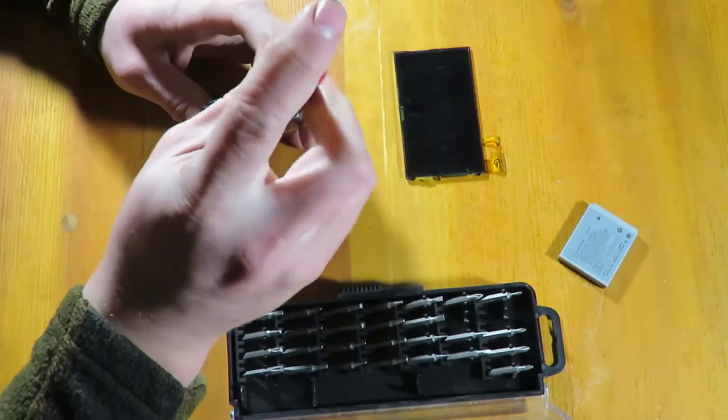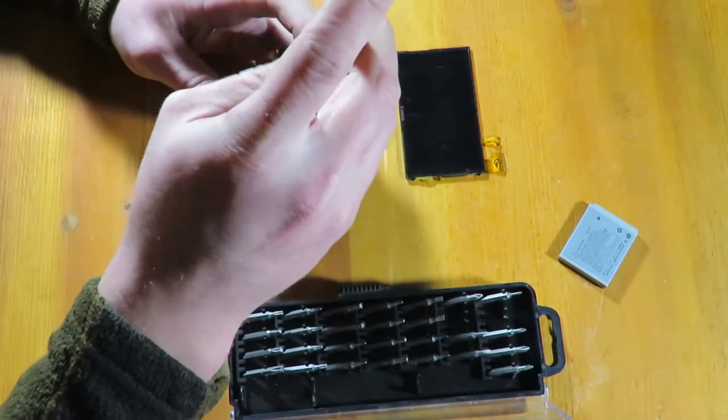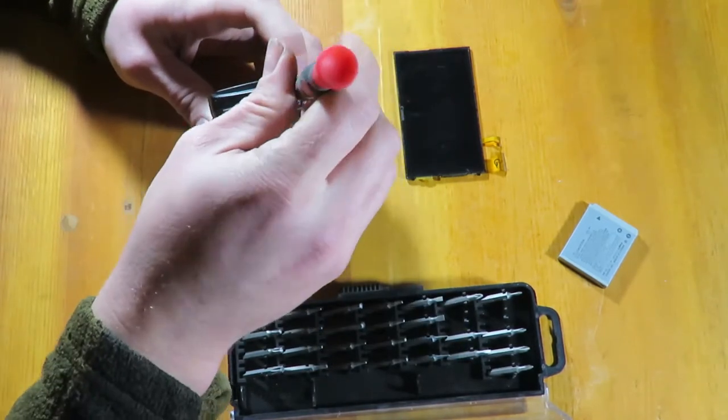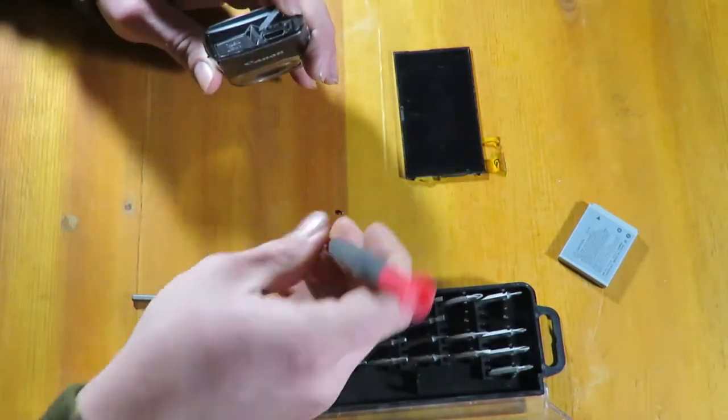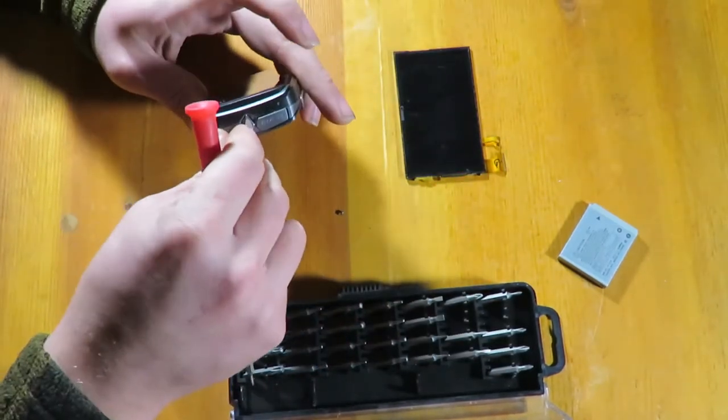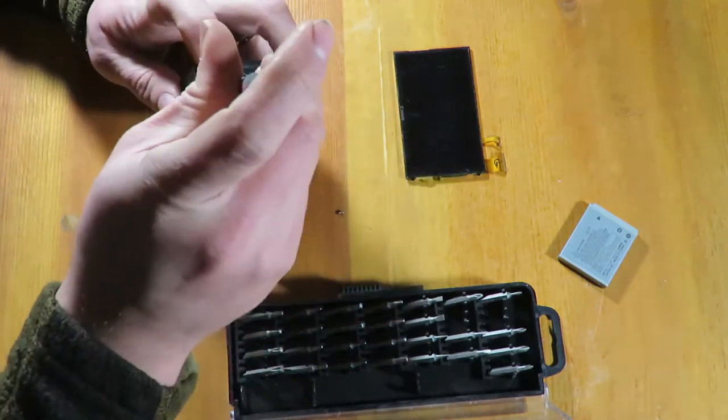I'm going to start by taking out a couple of screws that are underneath the HDMI and AV out digital covers. One under each. I'm using a Phillips size 00. And as always, put the screws in a pattern that matches where they came from on the camera, so that you know where to put them back.